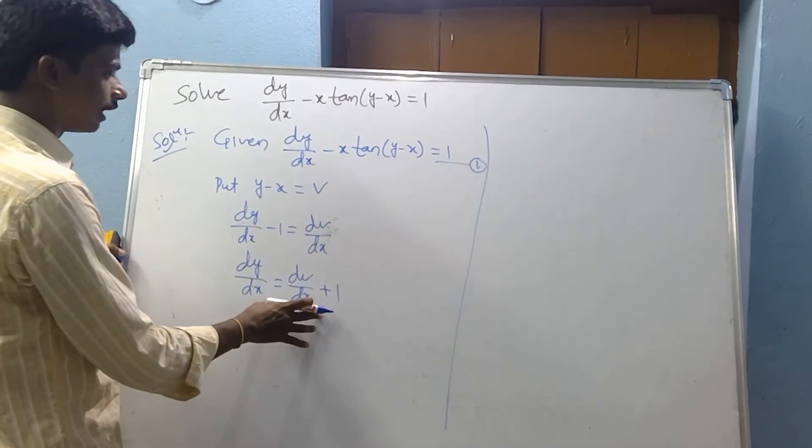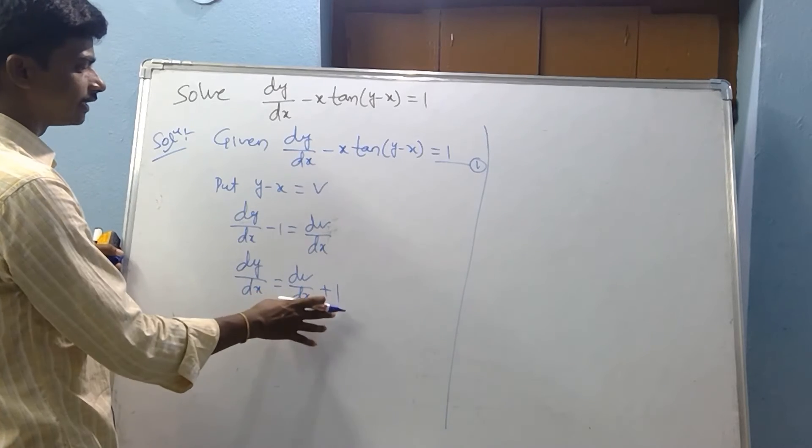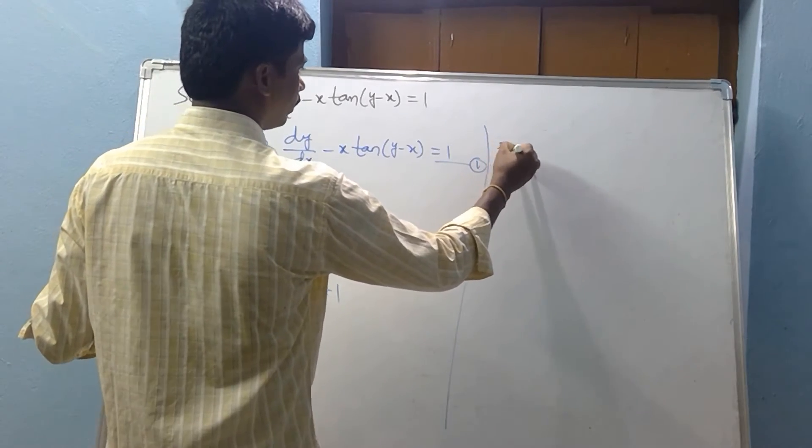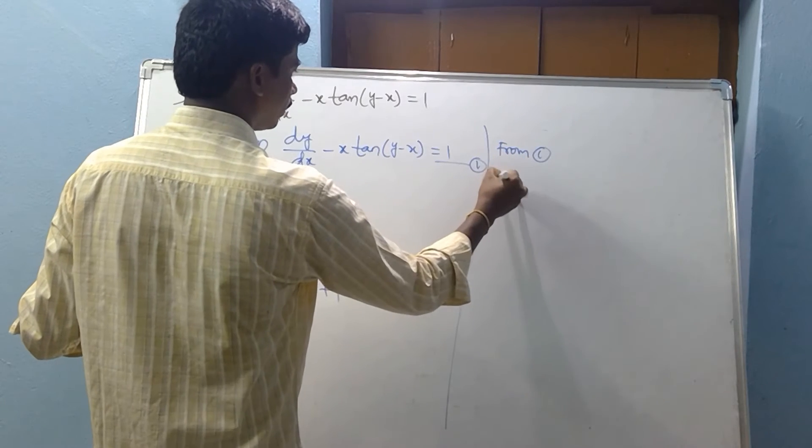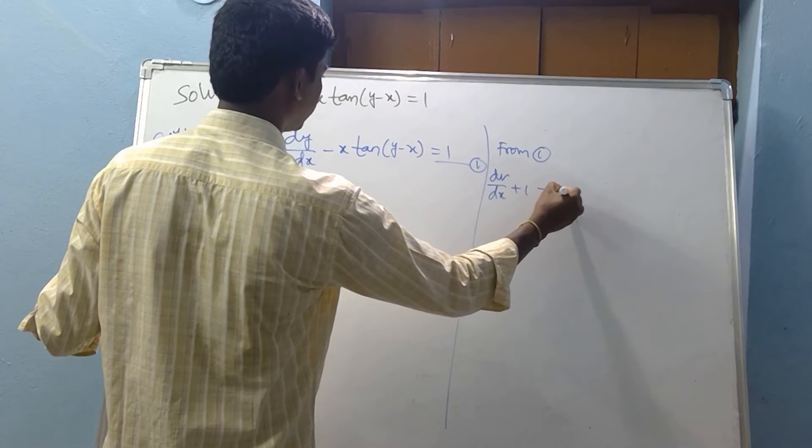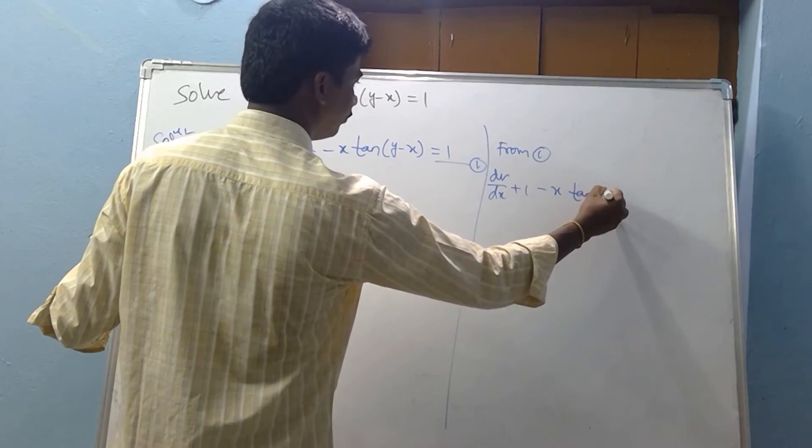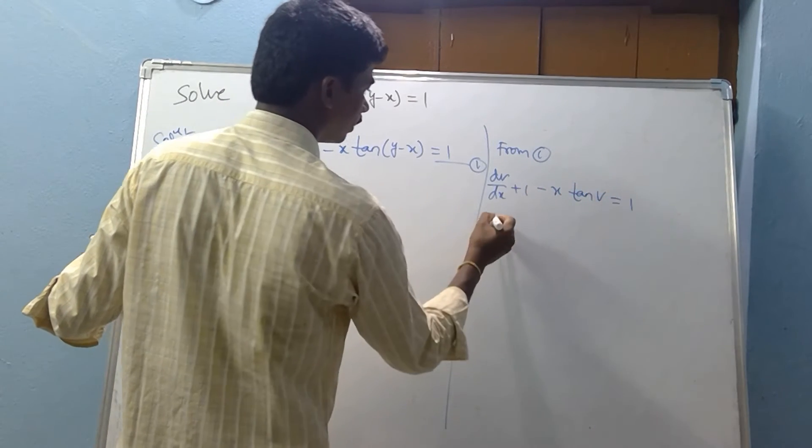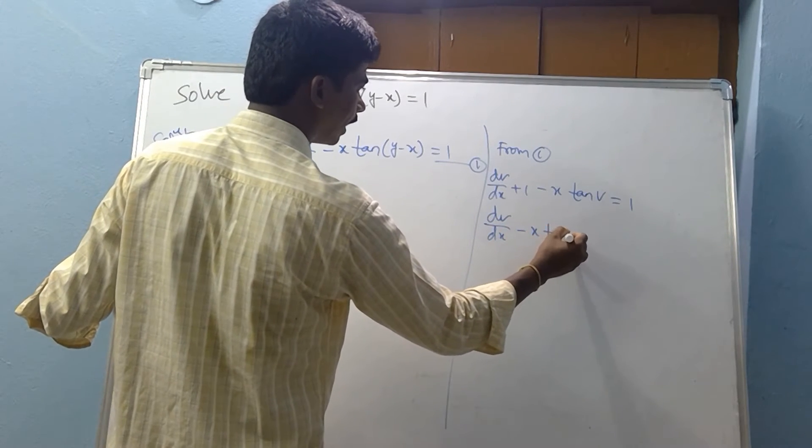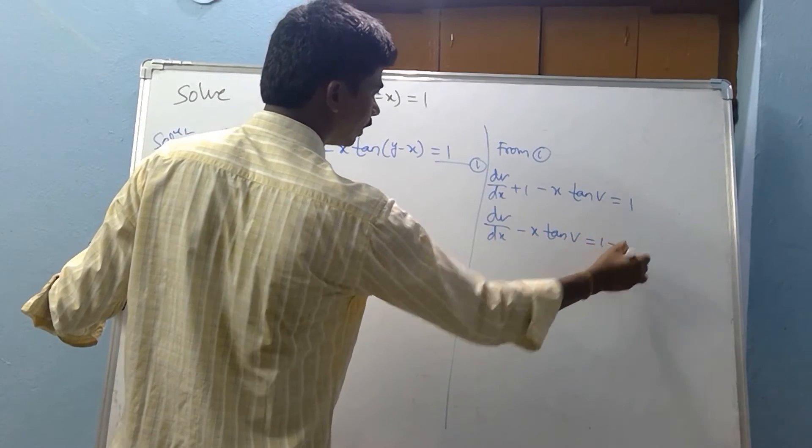Now see here, substituting this value in the equation. From equation 1, dy/dx equal to dv/dx plus 1. So dv/dx plus 1 minus x tan v equal to 1.